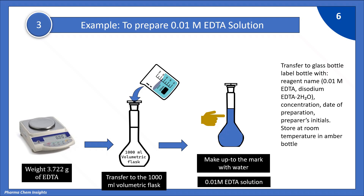Transfer this solution to a glass bottle. Label the bottle with the reagent name, concentration, date of preparation, and preparer's initials. Store at room temperature in an amber colour bottle. EDTA solution must be standardised because it is not a primary standard.